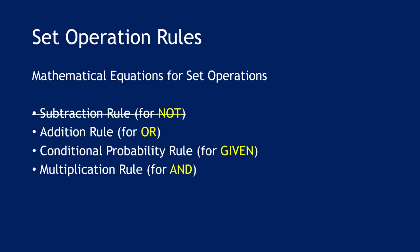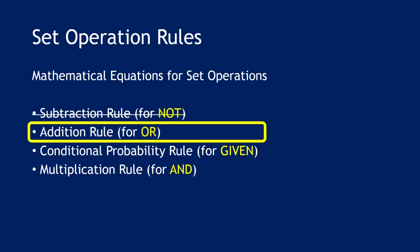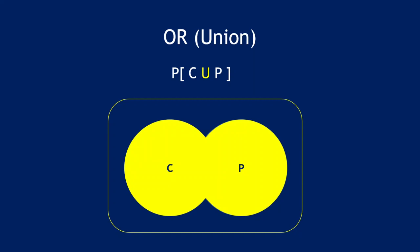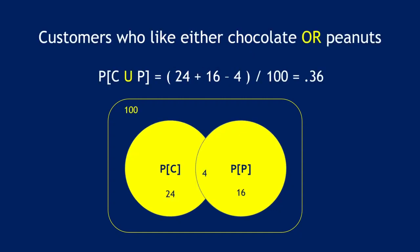We will talk about three rules today: the addition rule, the conditional probability rule, and the multiplication rule — these are for 'or', 'given', and 'and'. Starting with the addition rule for 'or' or union: recall that union is either circle, so it's a very inclusive operation. As long as you like chocolate or peanuts, you don't have to like both — we include you in the union.